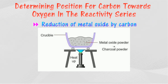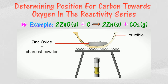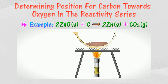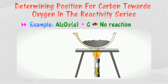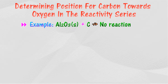We can also determine the position of carbon towards oxygen in the reactivity series using the reduction of a metal oxide by carbon. In this reaction, a mixture of carbon and metal oxide is heated. If carbon is more reactive than the metal, a white flame can be seen, and carbon acts as a reducing agent to reduce the metal oxide into the metal. If carbon is less reactive than the metal, no reaction occurs — for example, carbon is unable to attract oxygen from aluminum oxide.